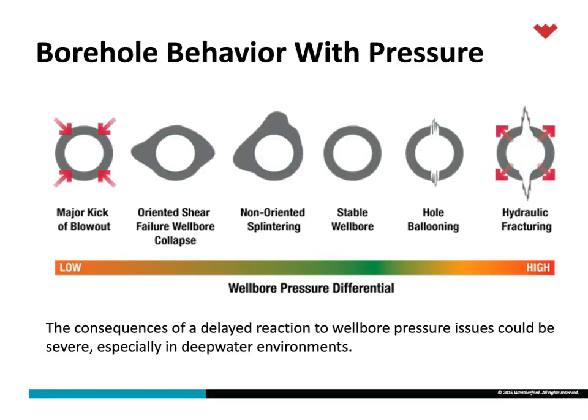Stable wellbore in the middle is what everybody hopes to have. Unless the well is not complex or very shallow, this is unlikely to be the case. The splintering and wellbore collapse on the left-hand side — we've had clients come to us with wells where they're not maybe concerned about having a blowout. But if the well pressure is cycled up and down during connections, during tripping, during flat-time well events, sometimes they get breakout, they get collapsed, they get shearing and splintering, and they may lose the wellbore or have to redrill.